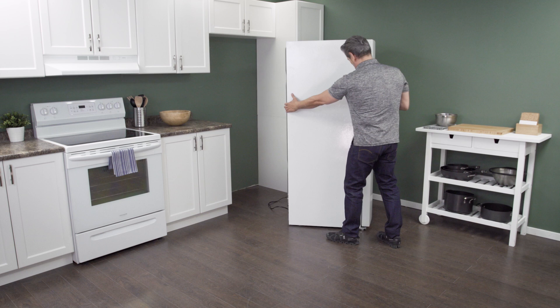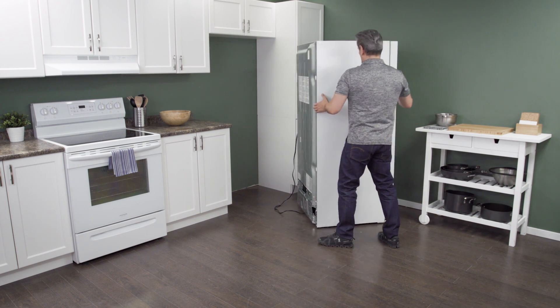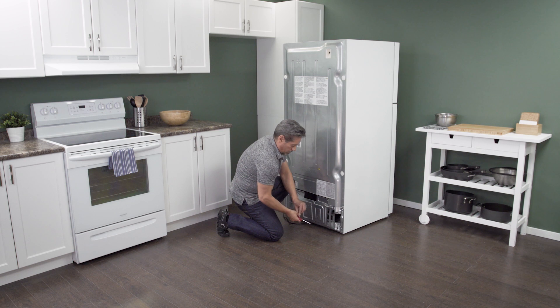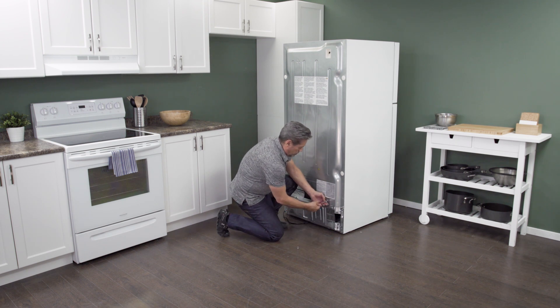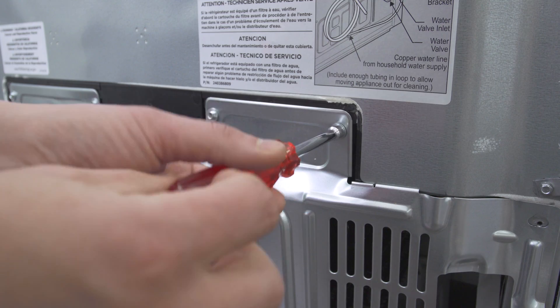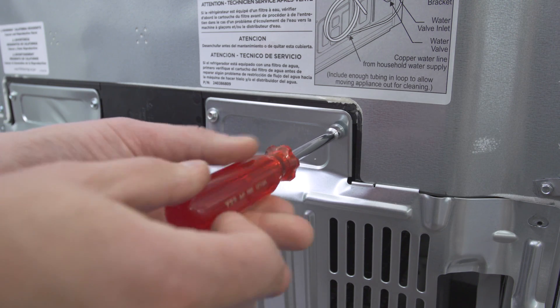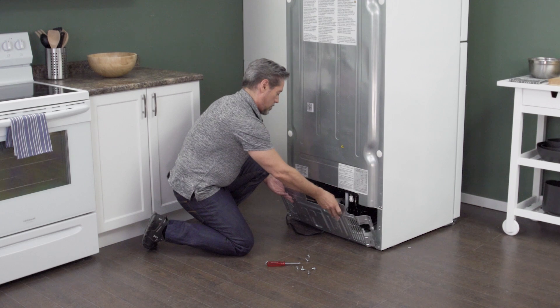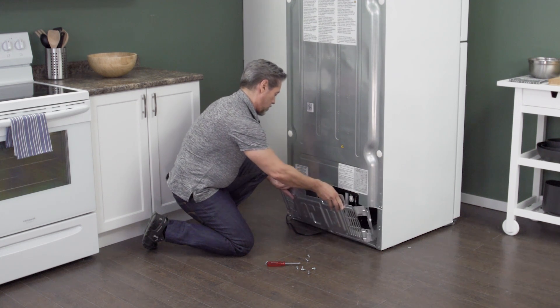Now slide the fridge all the way out, so you have plenty of room to work. On the back of the refrigerator is an access panel. Use a one quarter inch nut driver to remove the screws. Now simply lift up to remove the panel.